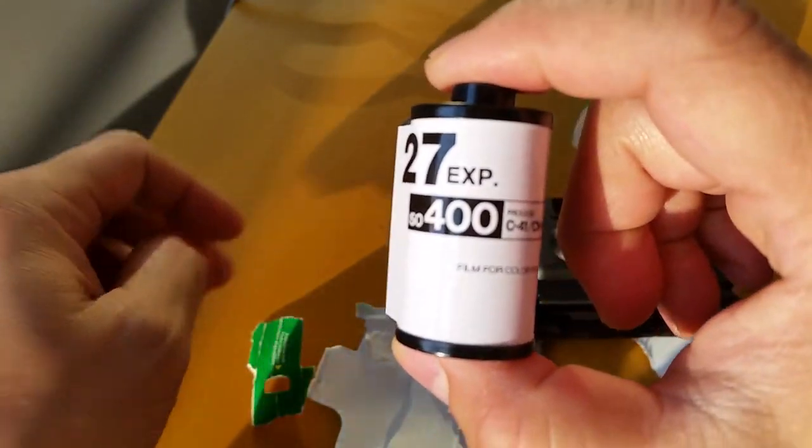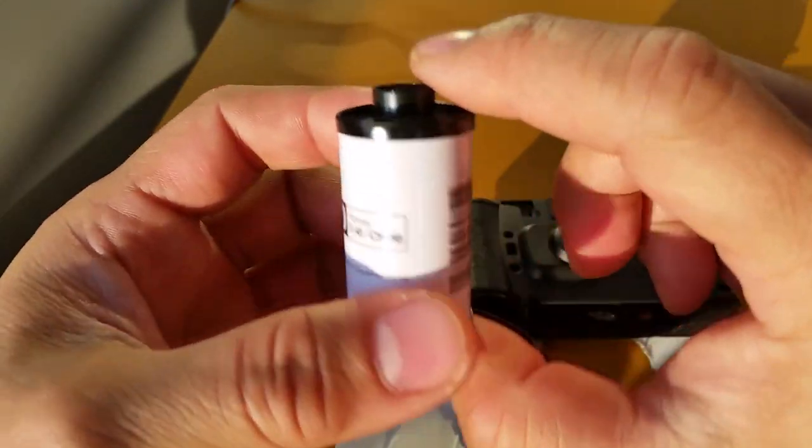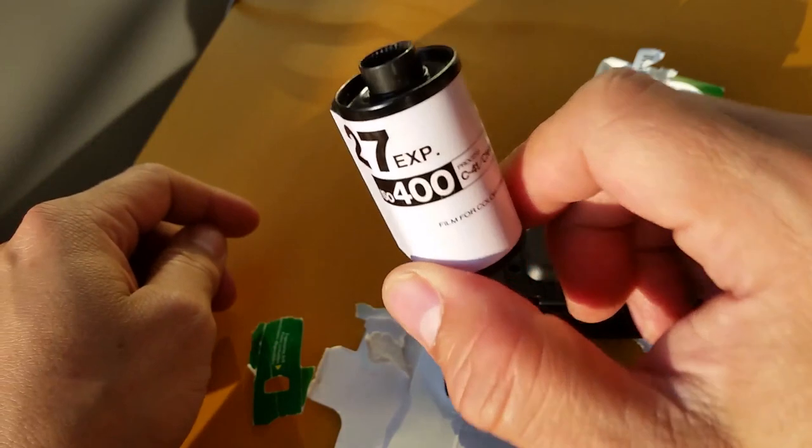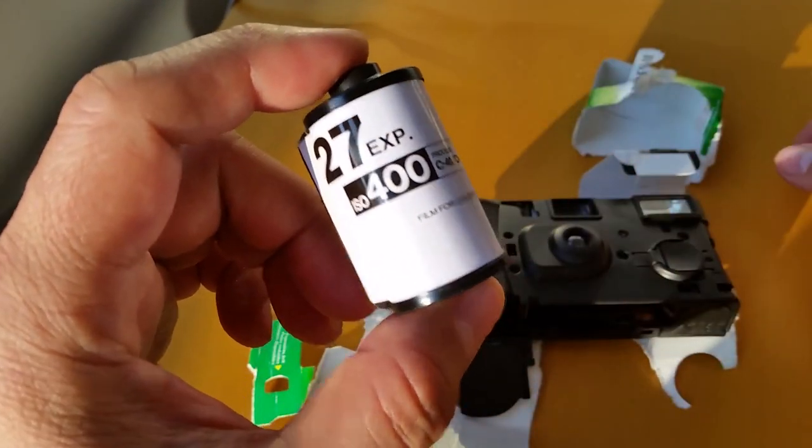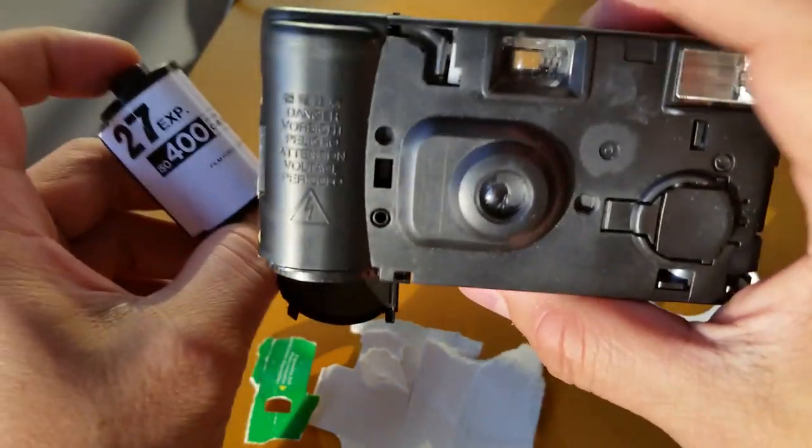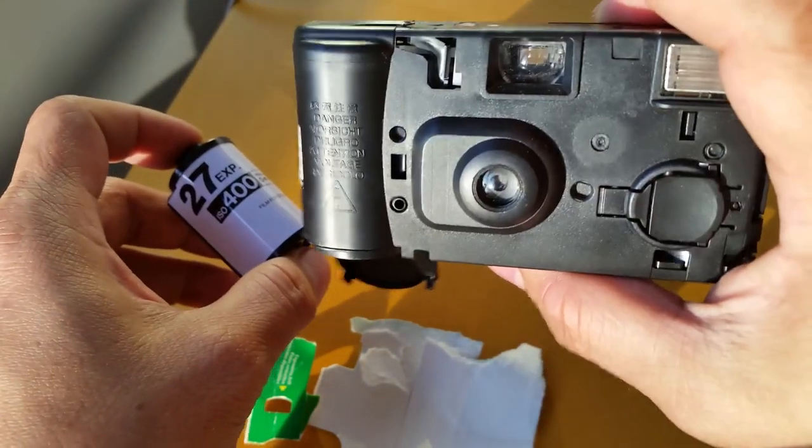So now, you can go to Costco. You can go anywhere that develops film, which is relatively cheap, and get this done for like three or four bucks. Versus, I think if you sent this in, it'd be like $15.